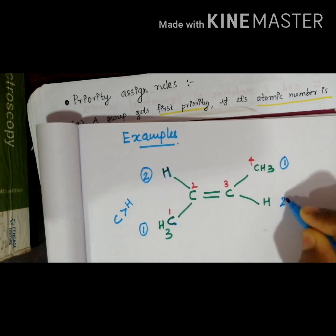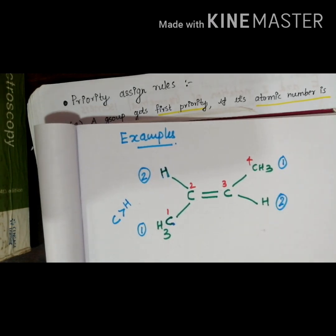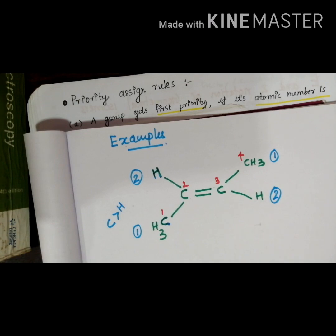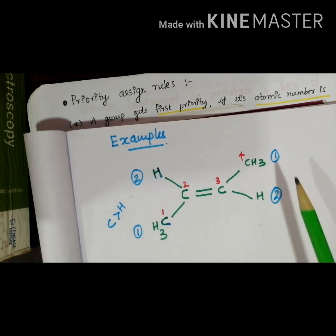Rule number one is complete, we can number the entire system. Then according to rule number two, we can compare the priority groups. You can compare the priority groups here: number one, two, one, two. Then rule number three and four, you can assign the E or Z notation.